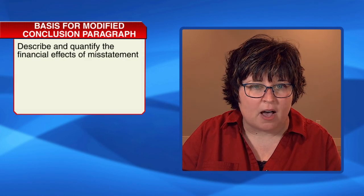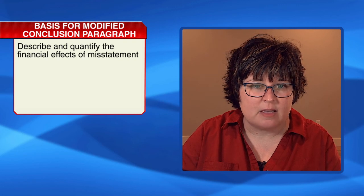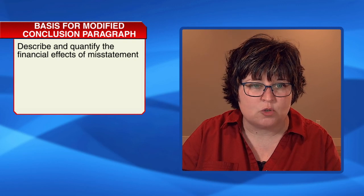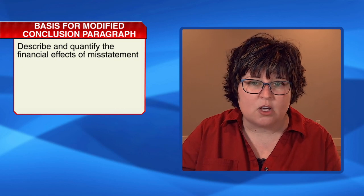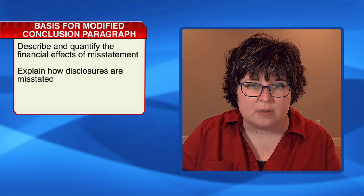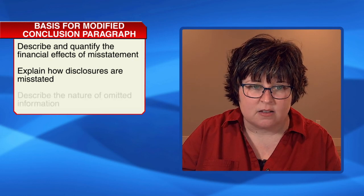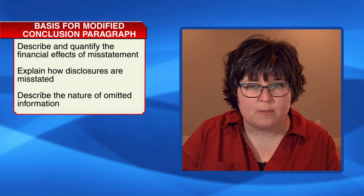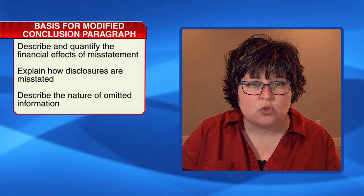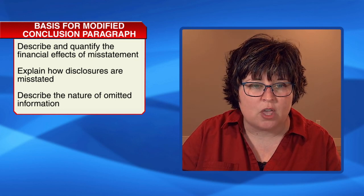The Basis for Modified Conclusion paragraph should describe and quantify the financial effects of the misstatement if the material misstatement relates to specific amounts in the financial statements, including quantitative disclosures. It should explain how disclosures are misstated if the material misstatement relates to narrative disclosures, and describe the nature of omitted information if the material misstatement relates to the non-disclosure of information required to be disclosed. The accountant should include the omitted disclosures when practical to do so.